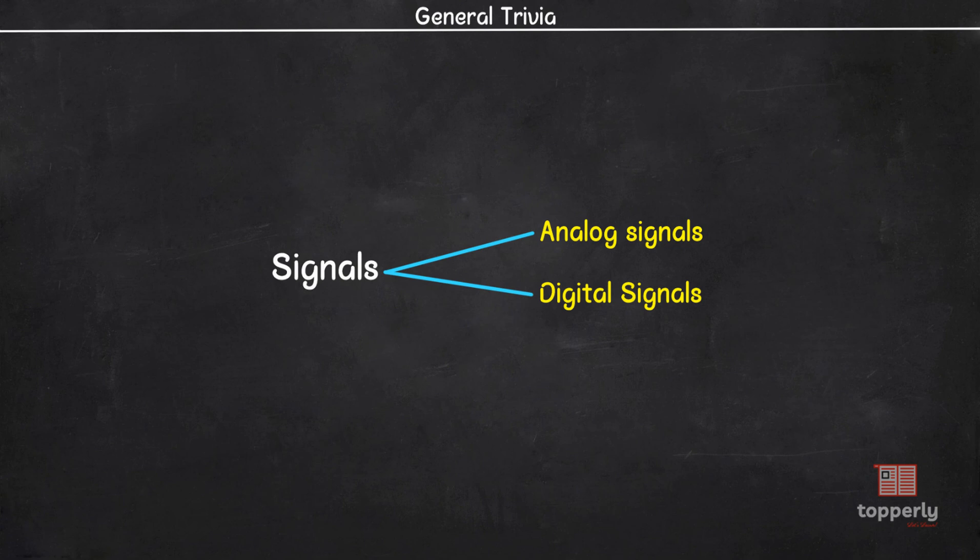Hey everyone, welcome to Topperly. Many people know that there are two types of signals, analog signals and digital signals.